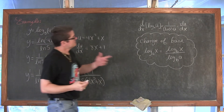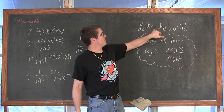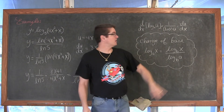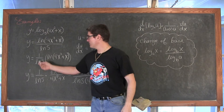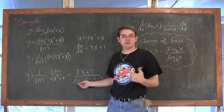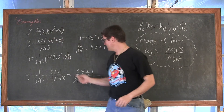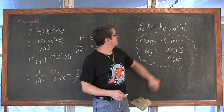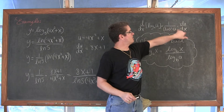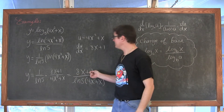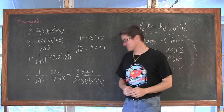There it is: the derivative of log base a of u is 1 over the natural log of a — we got that from converting into log base e — and that natural log of a is now in the denominator. Then it is u prime over u: the derivative of the inside function over u. That is the end of our first example.